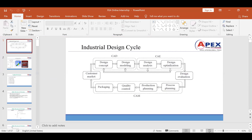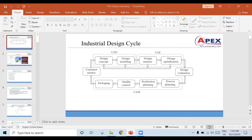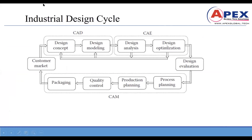I'll share the presentation now. This is the industrial design cycle, same as the new product development process. First we go for design concept, then design modeling — whatever component we are going to create, we generate the 3D model. Once you design the model, next you need to perform analysis.